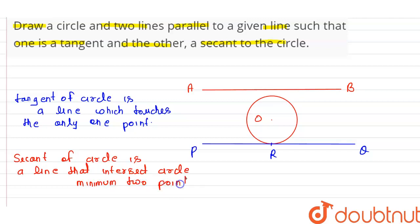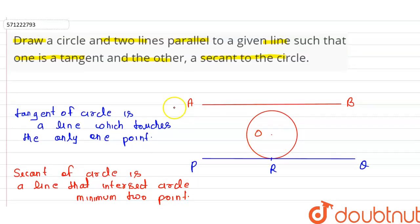When we draw this line, we have the condition that the line should be parallel to the given line AB. Let's suppose this is line RS. This line is parallel to AB and is also a secant because the line intersects the circle at a minimum of two points. So we have line RS and PQ. Thank you.